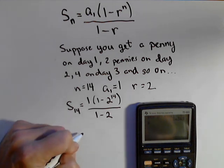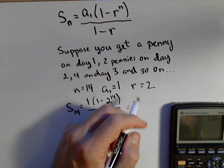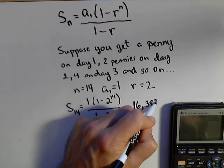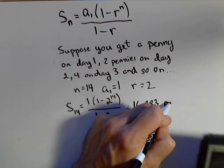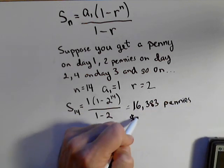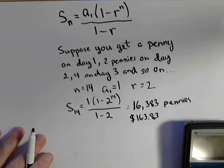So after 14 days we will have 16,383 pennies, or $163.83, not bad considering we started out with a penny.